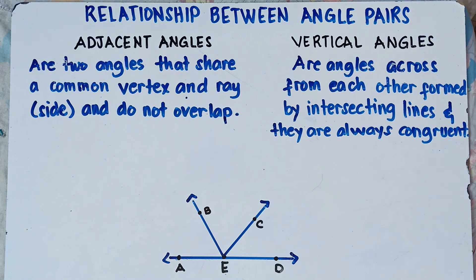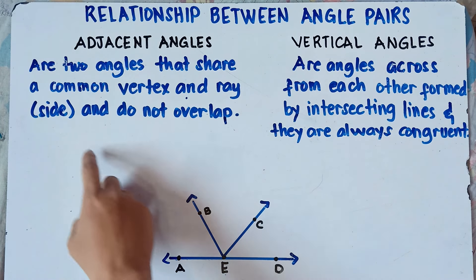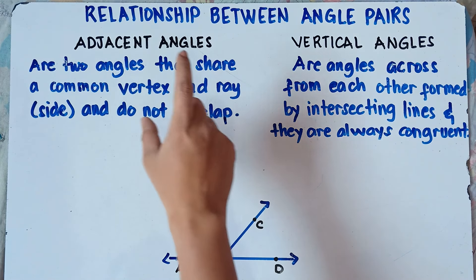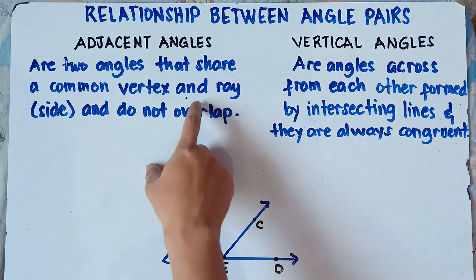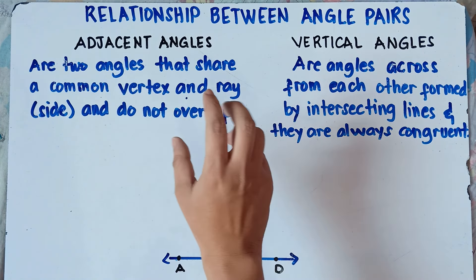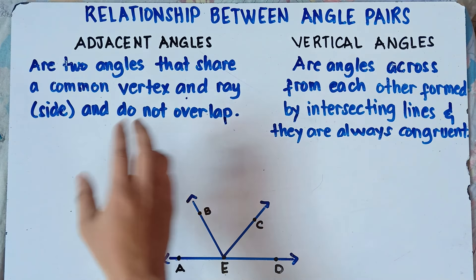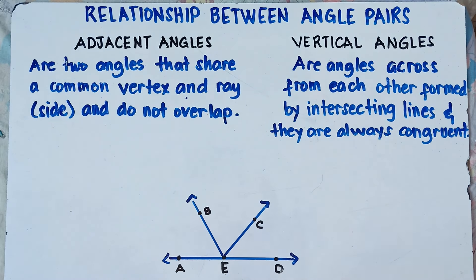Let's focus first on adjacent angles and vertical angles. Now let's talk about adjacent angles. What are adjacent angles? Adjacent angles are two angles that share a common vertex and ray, or side, and do not overlap.